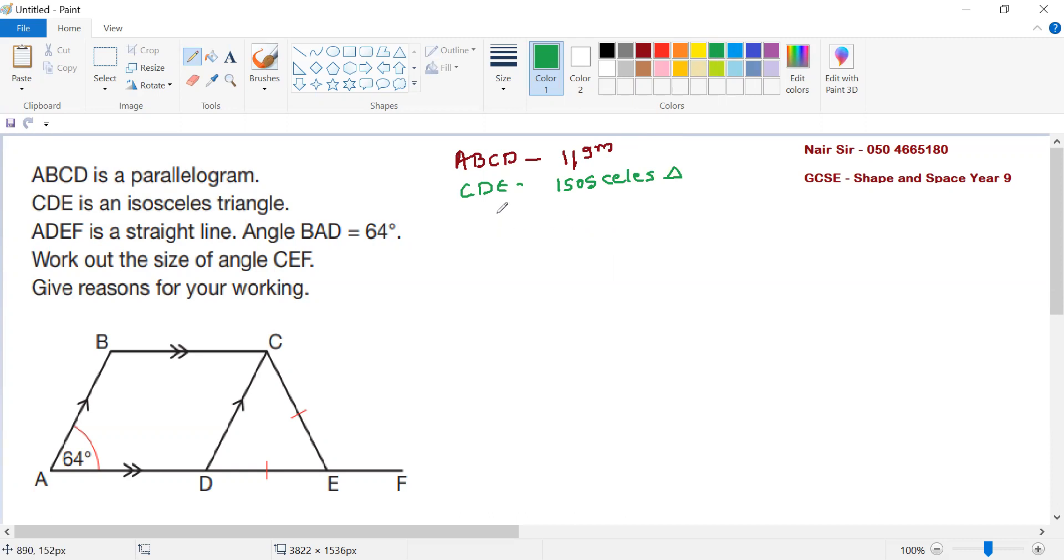We have been given ADEF as a line. Angle BAD is 64 degrees. We need to find angle CEF. Let us label it.